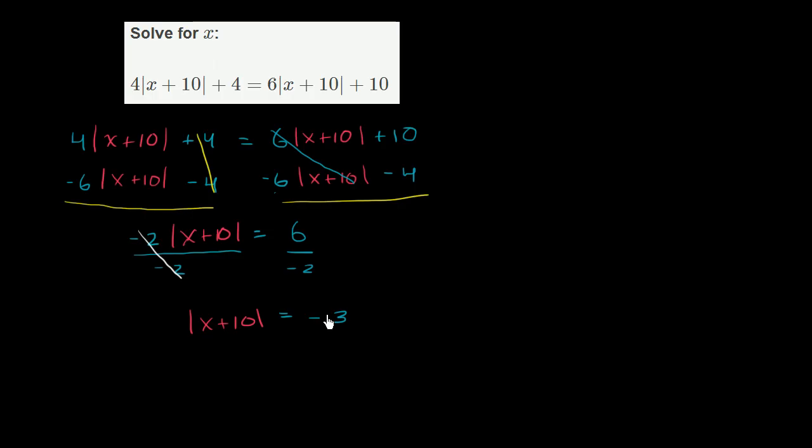Now this gets us to a very interesting situation. You might say, hey, maybe this could be the positive version or the negative version. But remember, absolute value is always non-negative. If you took the absolute value of 0, you would get 0. But the absolute value of anything else is going to be positive. So this thing right over here is definitely going to be greater than or equal to 0. It doesn't matter what x you put in there. When you take its absolute value, you're going to get a value that's greater than or equal to 0.